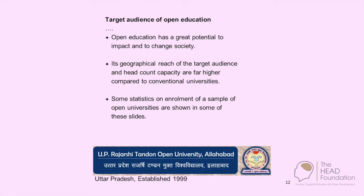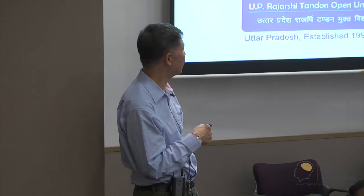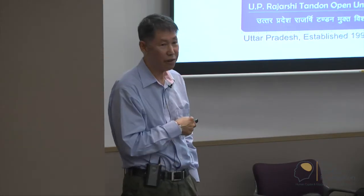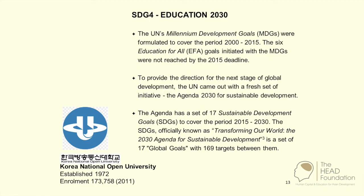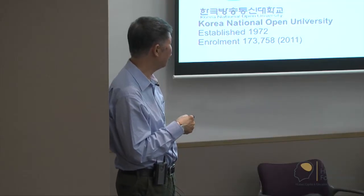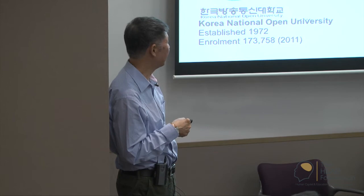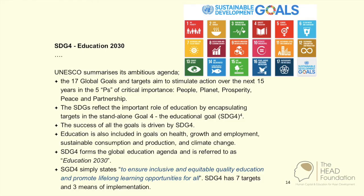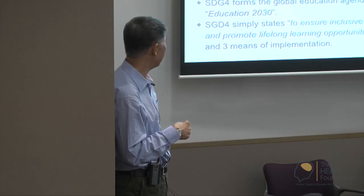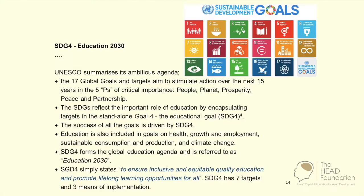Open education's geographical reach and headcount capacity is far higher compared to conventional universities. The UN came up with a fresh set called the Agenda 2030 for Sustainable Development. The Agenda has a set of 17 Sustainable Development Goals or SDGs to cover the period 2015 to 2030. Education is a main factor in these SDGs, and SDG 4 is referred to as Education 2030.